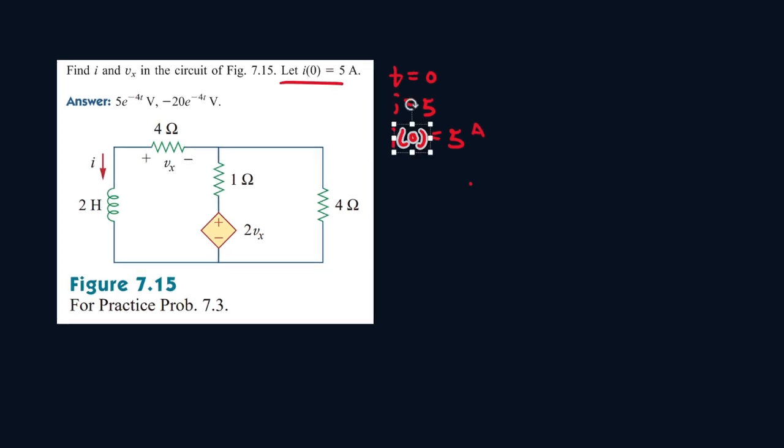And we're going to use the following formula to solve for the equation to represent i. So it will be i at 0 times e to the power of t over the time constant. So we know i at 0 is 5, so that's the first part that's already done. Now the time constant is the tricky part. The time constant will be equal to the resistance equivalent times the inductance value all over the resistance equivalent.